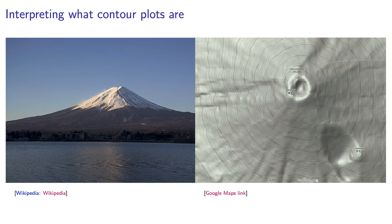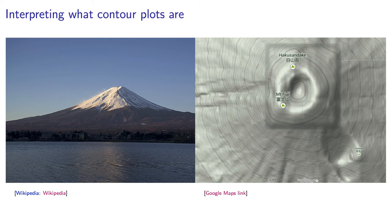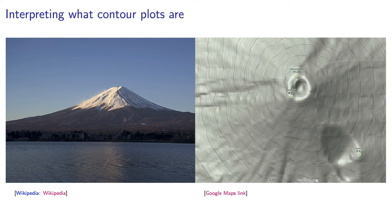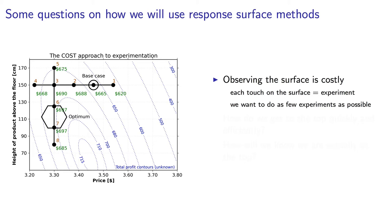The objective is to find the maximum on the contour plot using that pole. Each time you touch the surface, you are observing the system and get an outcome value. But when you do that, it is a really expensive process.